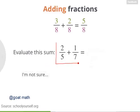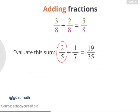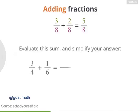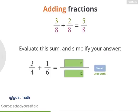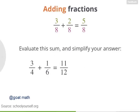Excellent work. So 2 fifths plus 1 seventh equals 19 thirty-fifths. Again, you had to rewrite the fractions so they had the same denominator, which was 35 in this case. Try another example. What's 3 fourths plus 1 sixth? Enter the numerator and denominator of your answer and make sure to simplify, canceling out any common factors. Nicely done. So 3 fourths plus 1 sixth equals 11 twelfths.